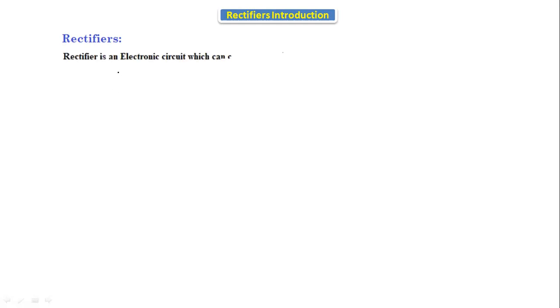Today we are going to discuss about rectifiers — what is a rectifier, its applications, and an introduction. A rectifier is an electronic circuit which can convert AC into pulsating DC. This pulsating DC is nothing but DC plus AC ripples.